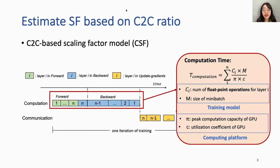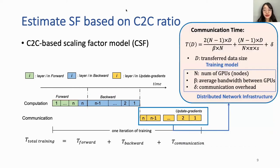Computation time can be estimated by two main factors: the floating point operations required in forward and backward computation, and the actual compute capacity of computing nodes like GPUs. Communication time is determined by total transferred data size and average bandwidth, related to communication architecture and network infrastructure, obtained from the distributed platform settings.